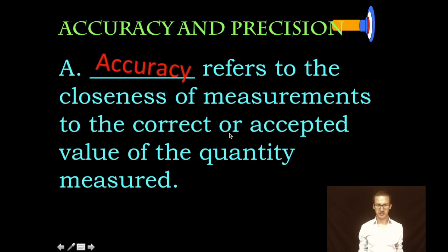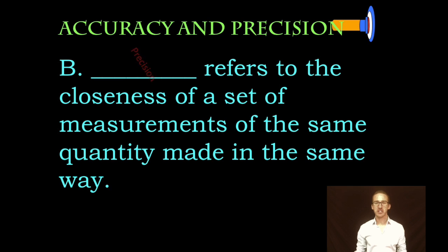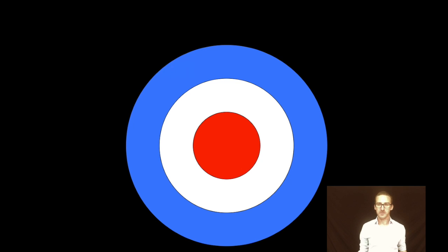How close did you get to where you should be? Definition of precision refers to the closeness of a set of measurements of the same quantity made in the same way. Now these two terms are often confused, especially when we're first learning them and trying to figure out what they mean.